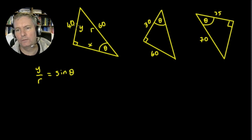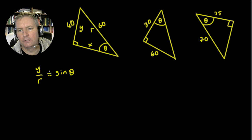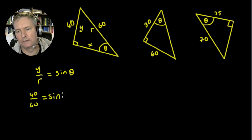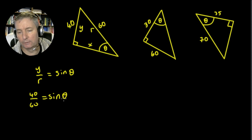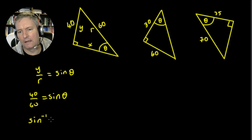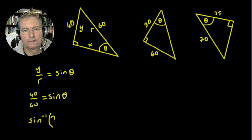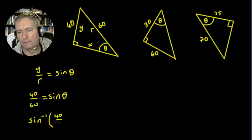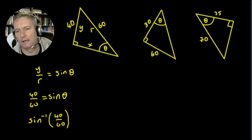The sine is just the opposite — that's opposite the angle — divided by the hypotenuse. So we can say that our value of 40 divided by 60 is equal to the sine of theta. But we are not looking for the sine of theta; we are actually looking for the angle theta. So we can say that the inverse sine of 40 divided by 60 will give us the angle theta.